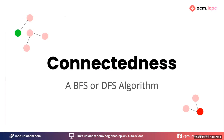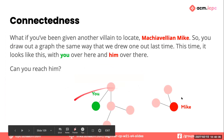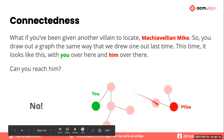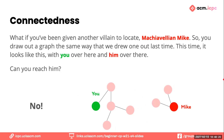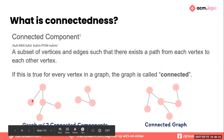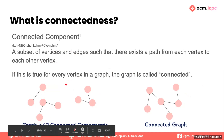Next: connected components. Imagine you're given another villain to locate — Machiavellian Mike. You draw out the graph and this time there are two disconnected parts. Can you ever reach Mike? No — there's no series of phone calls that gets you to him; no one in your component knows anyone in his. A connected component is a subset of vertices and edges where there exists a path from each vertex to each other vertex. If this is true for every vertex in the entire graph, the whole graph is called connected. This graph has two connected components.